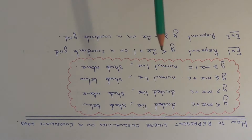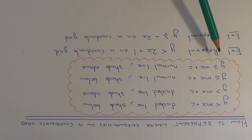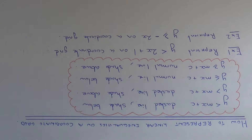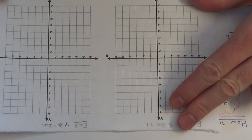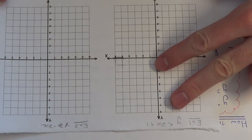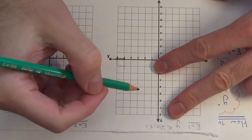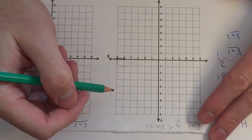So let's go over two examples. For example one, we need to represent y is less than 2x plus 1 on a coordinate grid. Here's our coordinate grid. The way I'm going to do this is to use the gradient and intercept method.